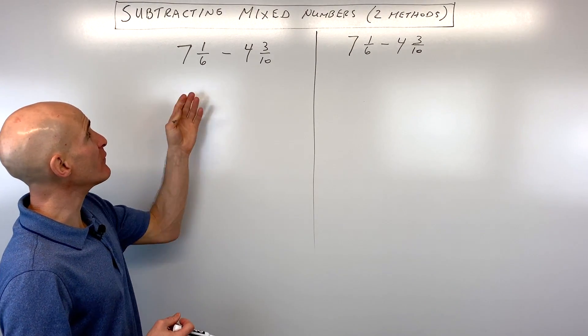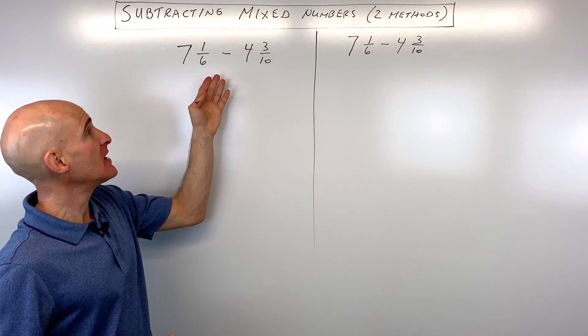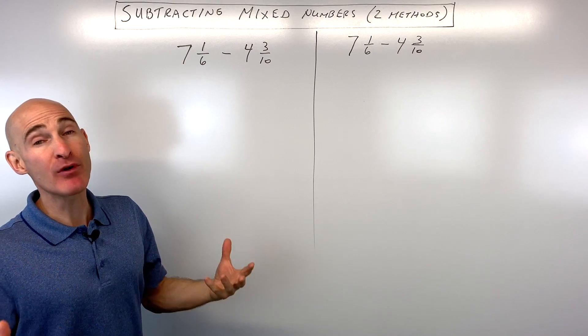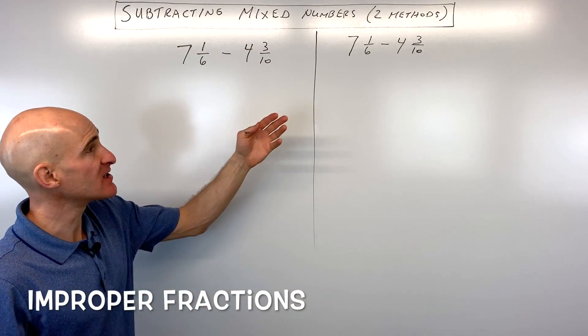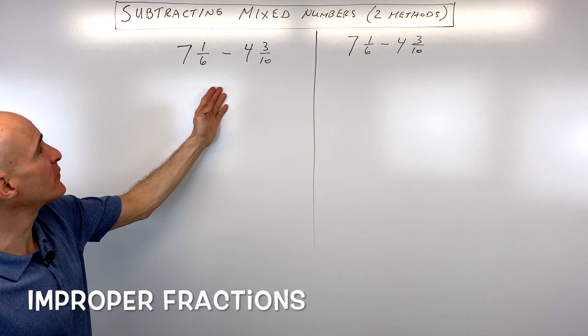First way we're going to do it is we're going to convert both fractions into improper fractions. And then the second example, I'm going to show you another method. So let's jump with the improper fraction method first.